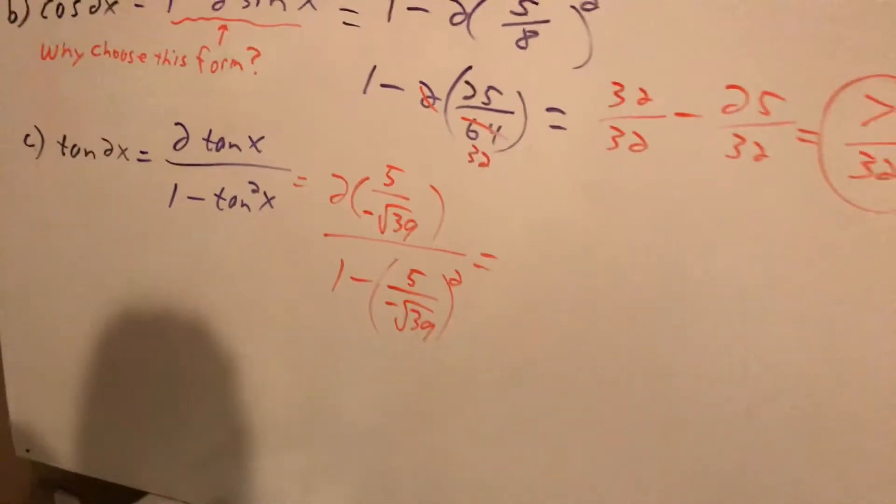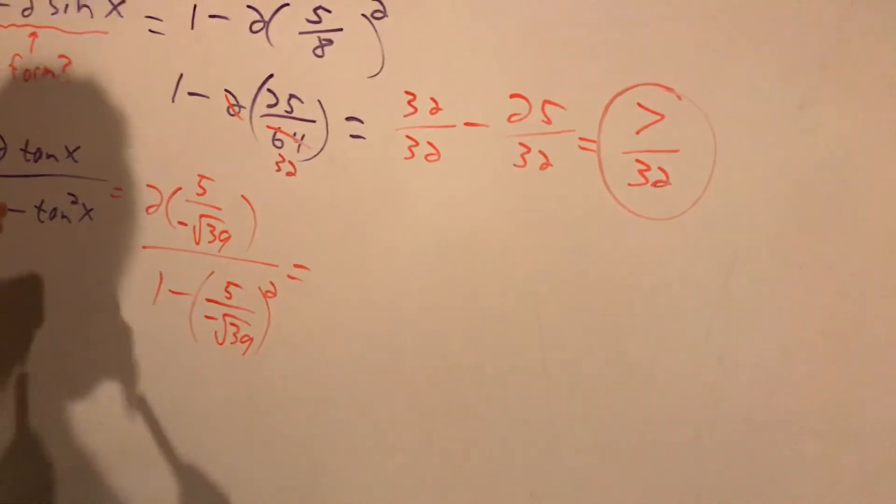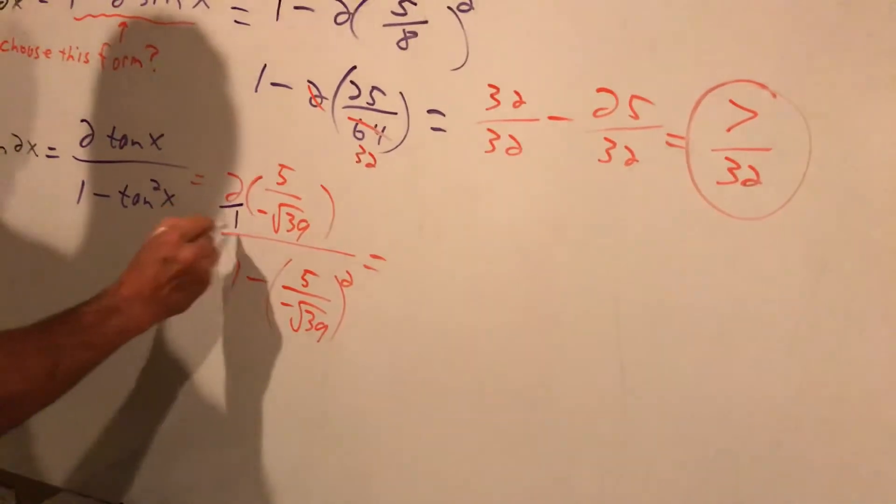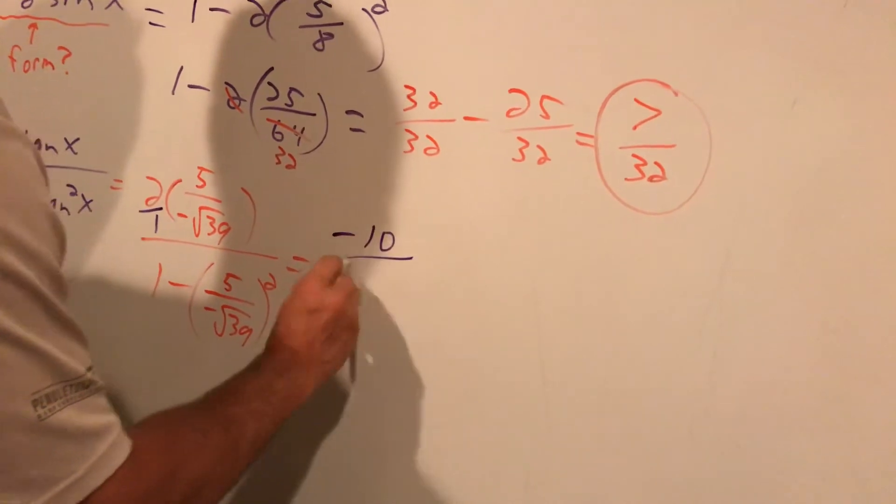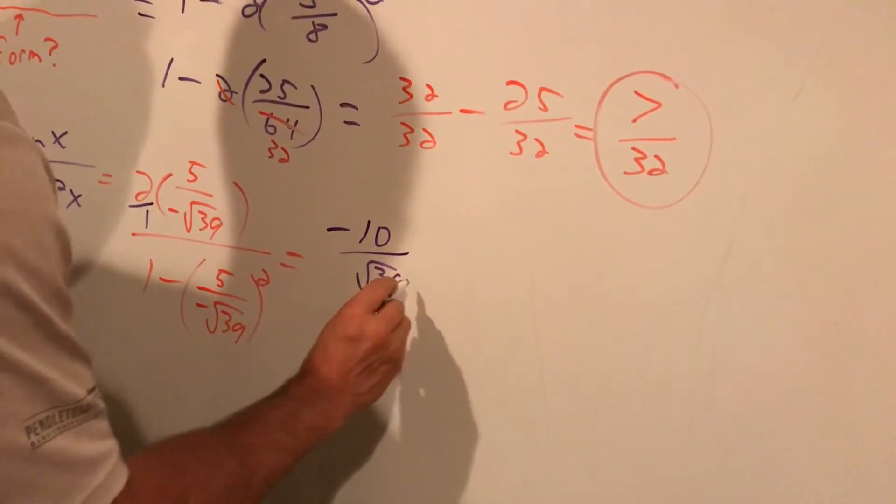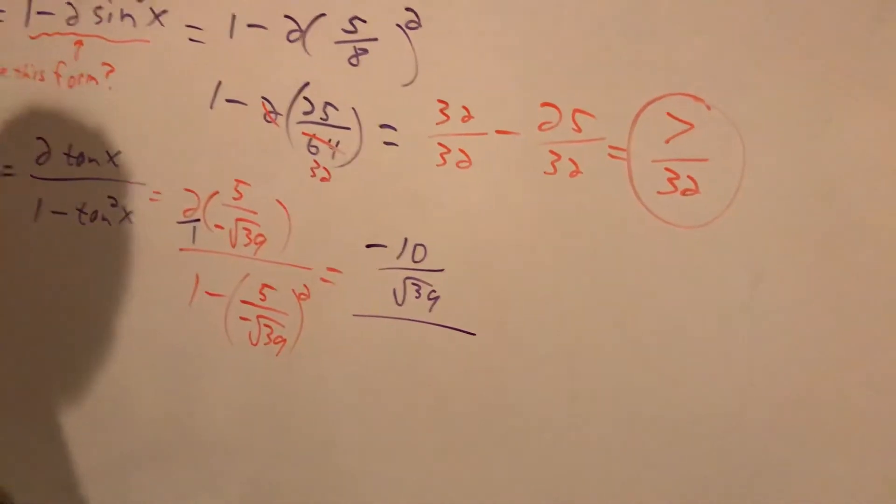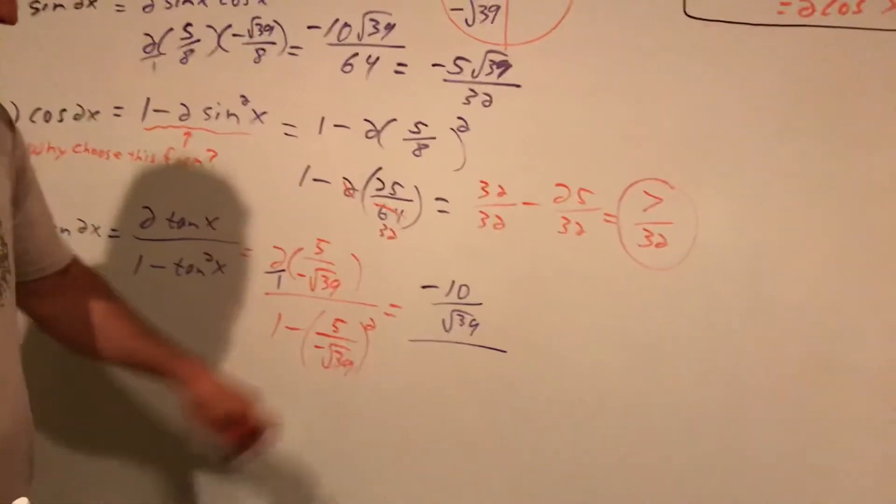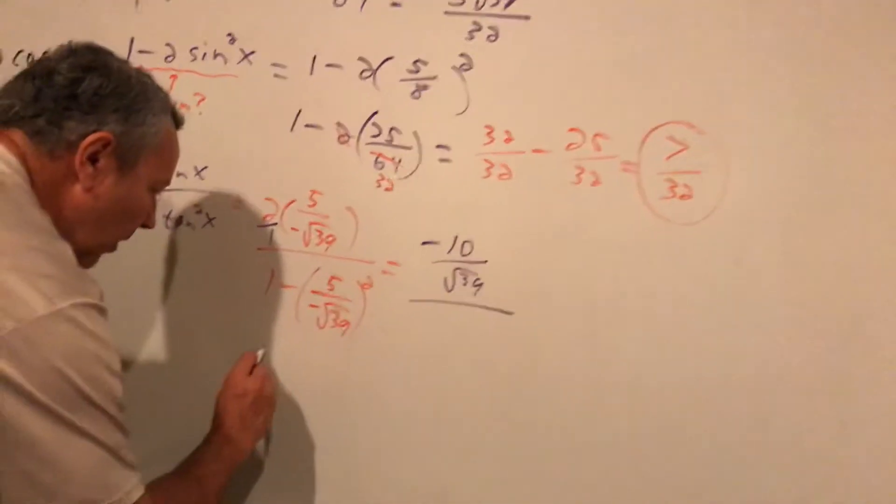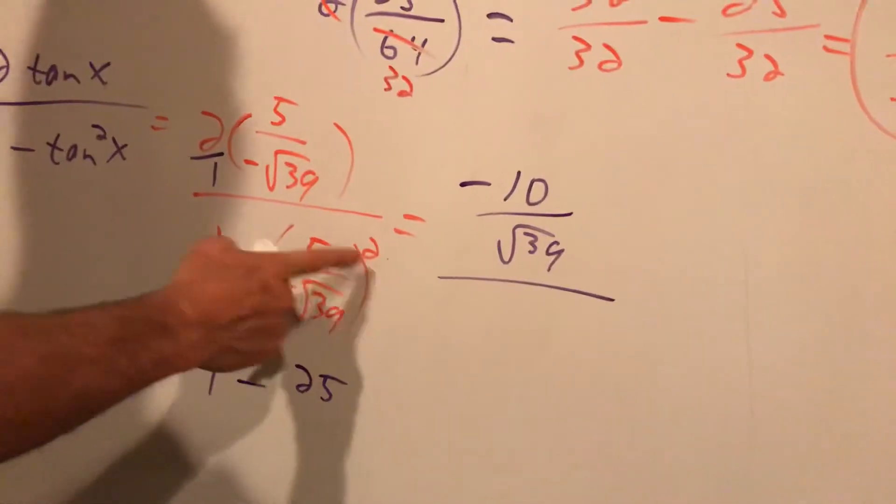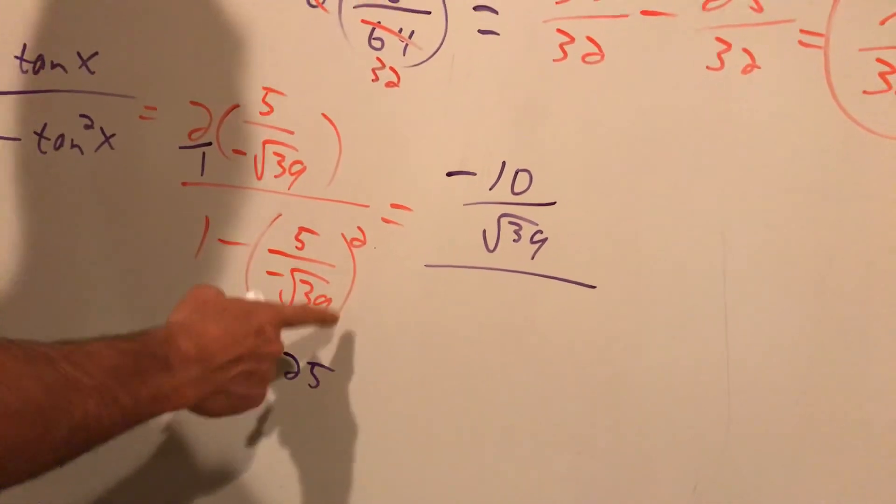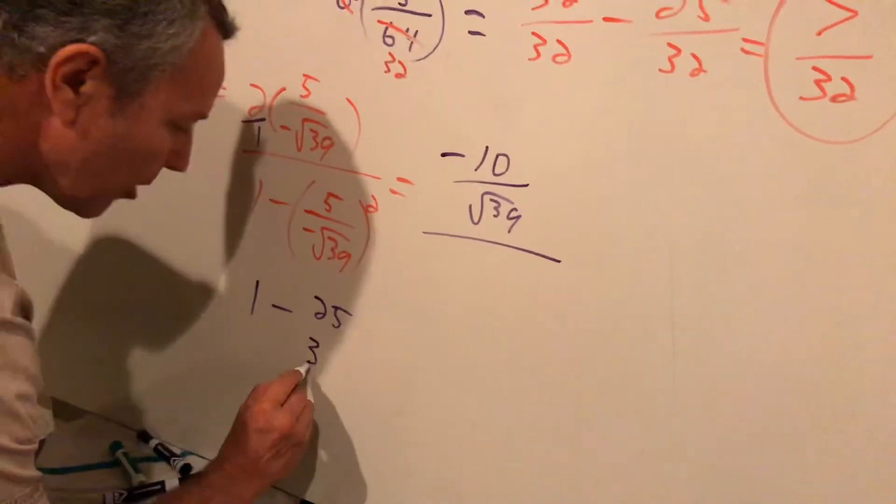Okay, let's take care of the top. This is 2 over 1 and multiply across. That's going to be a negative value. It's 10 over the root 39. I'm going to square this. This becomes 1 minus 25. A negative squared is positive. Root 39 squared is going to be a regular 39.